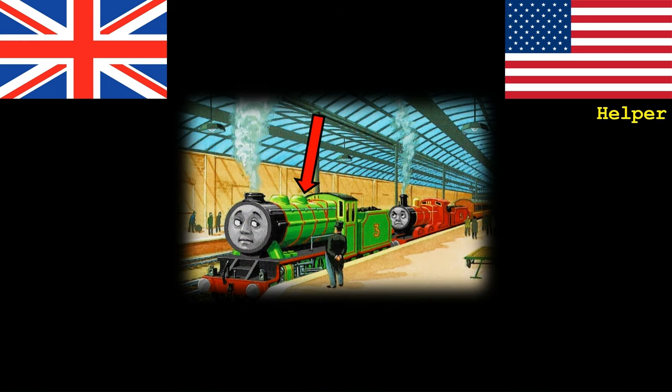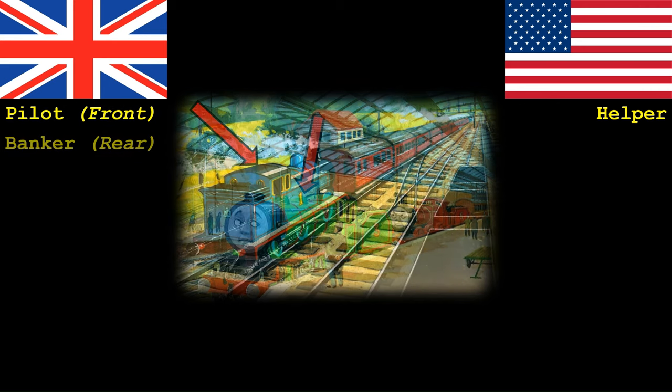Sometimes one engine or locomotive is not enough for a single train, and so additional engines or locos will be added to help. Hence why in America they are known as helpers. In the UK however there are two terms depending on the engine's purpose. If the additional engine or loco is attached to the front of the train, then they are known as a pilot. If however they are attached at the rear, then they are known as a banker. Whilst this may be a British term, there are some steep grades in America where they do occasionally refer to these locos as bankers.